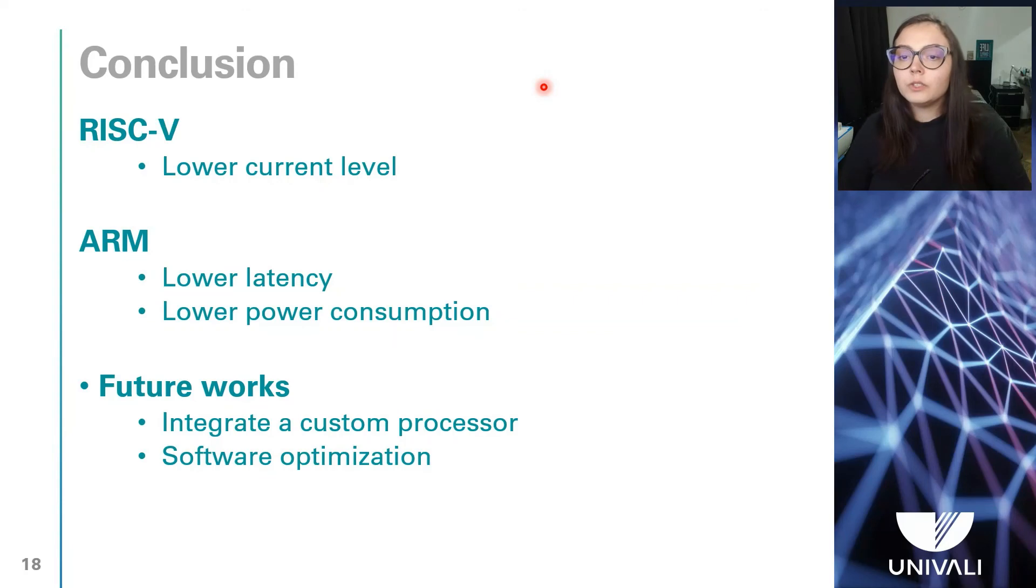This work presented the evaluation of platforms based on the RISC-V and ARM processors running the CCSDS-123 compressor through a set of experiments that enable to compare their performance and power consumption.